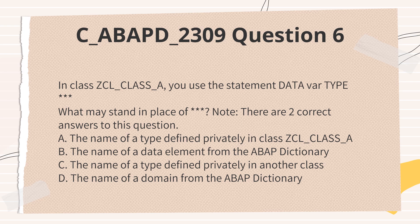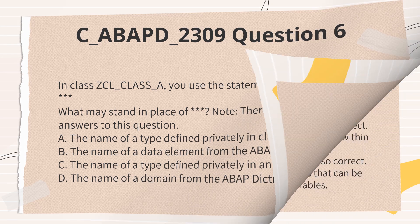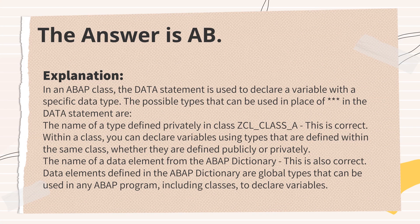A. The name of a type defined privately in class CCL_CLASS_A. B. The name of a data element from the ABAP dictionary. C. The name of a type defined privately in another class. D. The name of a domain from the ABAP dictionary.